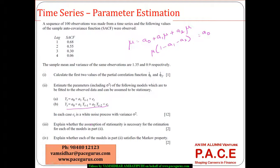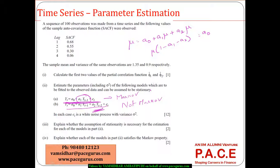Regarding whether each model satisfies the Markov property: the Markov property means the current value depends purely on the single previous period's value. In the AR(1) model, yt depends only on yt-1, so it is Markov. In the AR(2) model, there is a dependency on yt-2 as well, so it cannot be considered a Markov process.